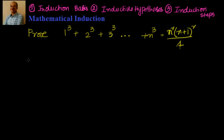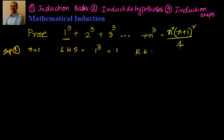Let's go ahead with Step 1: prove that it's true for n=1. On the LHS, the first term at n=1 is 1³, which equals 1. On the RHS, n²(n+1)²/4 substituting n=1 gives 1 × 2² / 4 = 4/4 = 1. We can see LHS equals RHS for n=1.